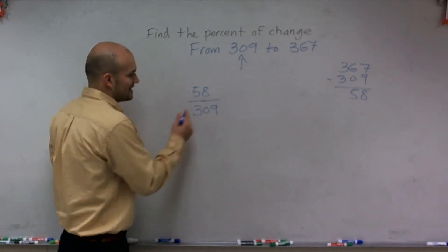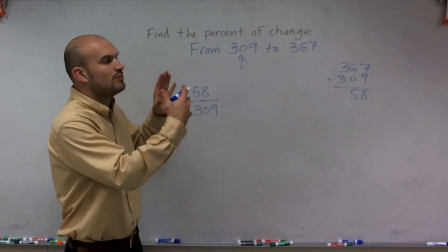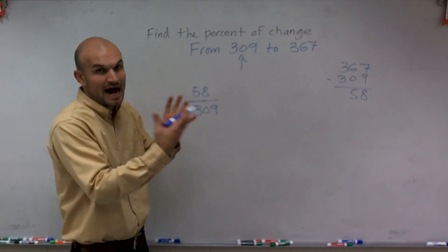So 309, again, is what I initially started with. That's my whole. 58 is the part that changed out of my whole.